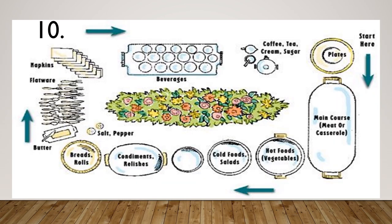This is number 10 — for those who enjoy unlimited buffets or eating at restaurants. Usually this shows the flow of services and how they provide the food. You follow a certain route or pattern. How do we classify this type of layout?